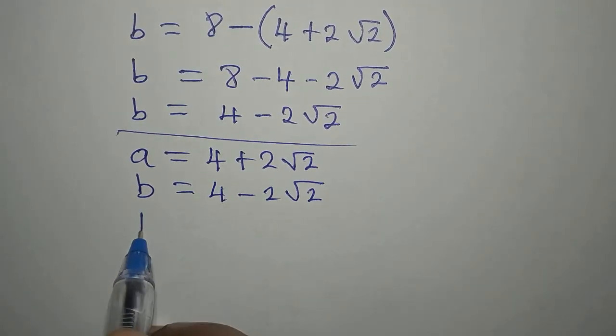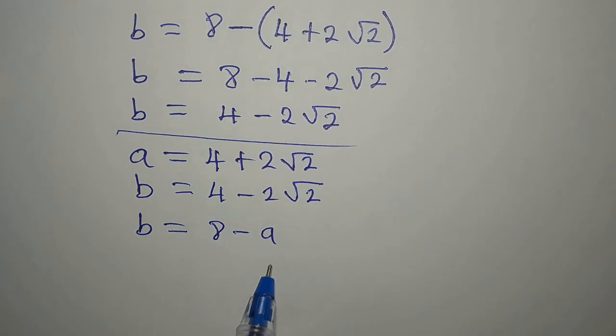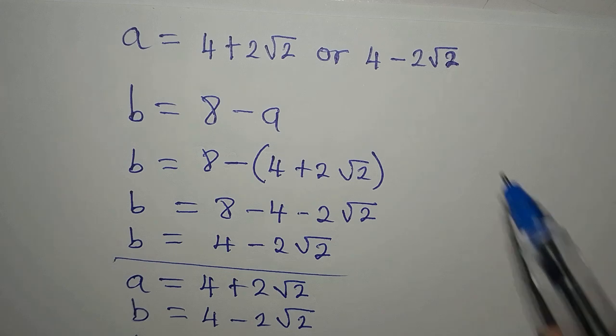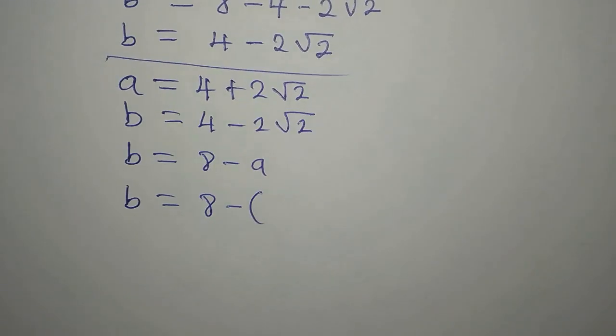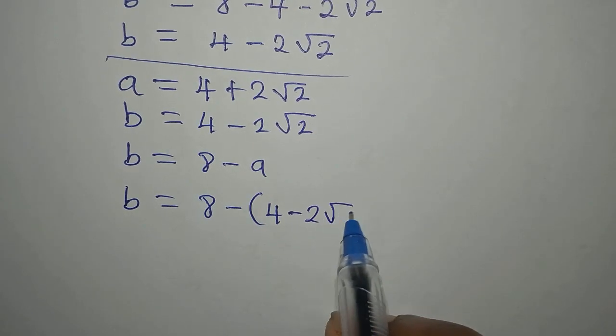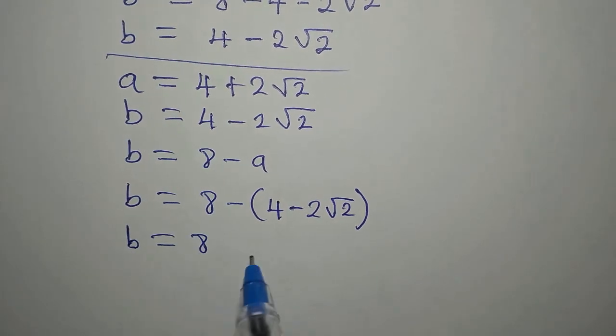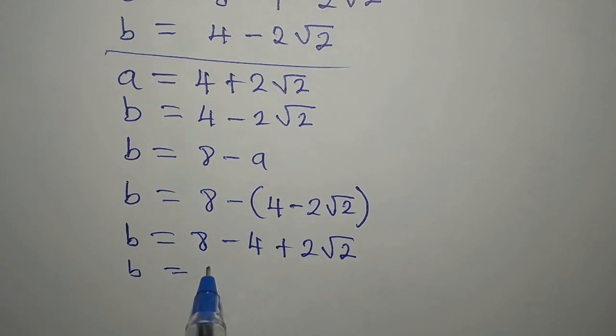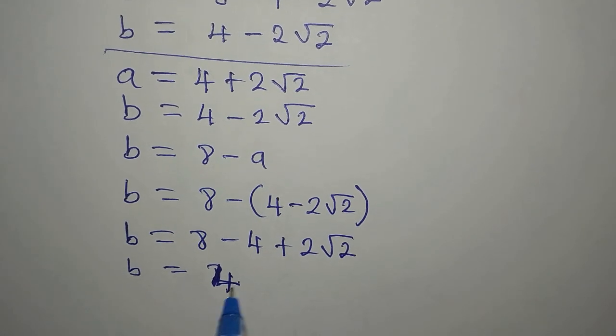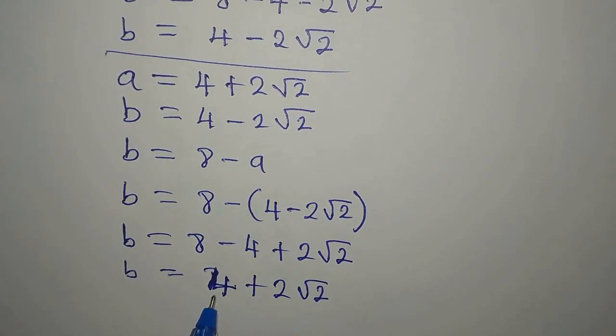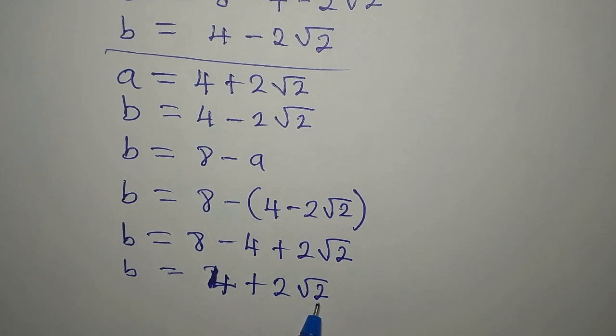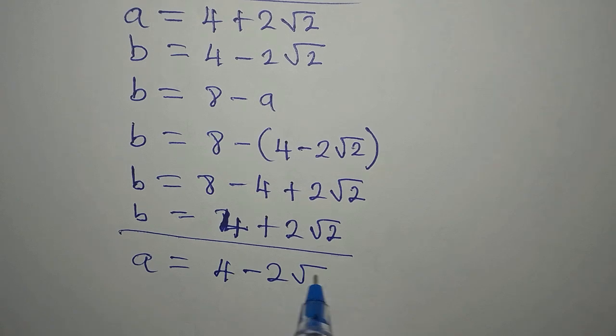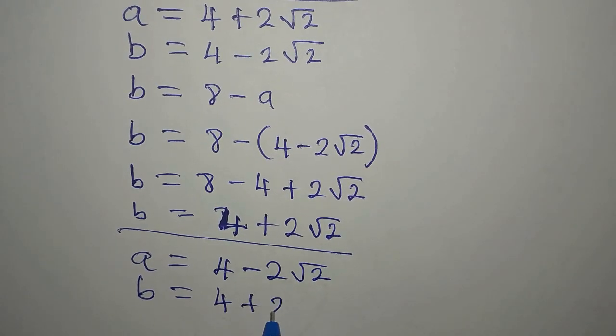Now, we will still continue. Because B is still 8 minus A. And we have another value of A. So B now will be 8 minus... This time around, I am picking this value of A. So we have 4 minus 2 root 2. So that B is equal to 8 minus 4 plus 2 root 2. And then B will be equal to... 8 minus 4, that is 4. Then we have plus 2 root 2. Mind you, I cannot add this 4 and 2. Because this belongs to the root 2, right? So what are we saying? We are saying that when A equals 4 minus 2 root 2, B equals 4 plus 2 root 2.